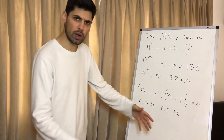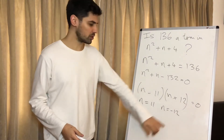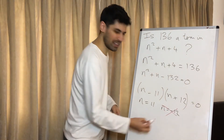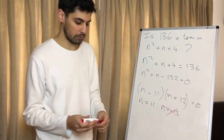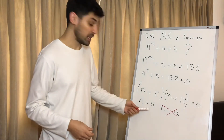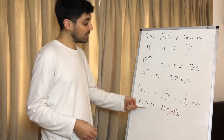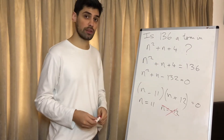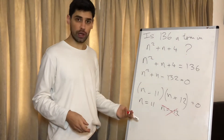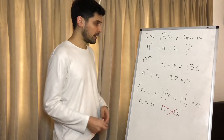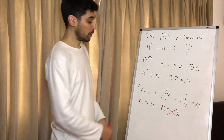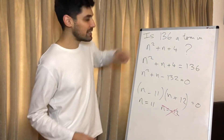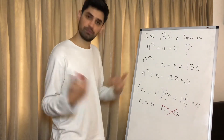For this bracket times this bracket to equal 0, one of the brackets must equal 0, because anything times 0 equals 0. So if the first bracket equals 0, n must equal 11. Or if the second bracket equals 0, n equals minus 12. We've got two values: n is 11 and n is minus 12. We can't have the minus 12th term in a sequence, but n equals 11 does make sense — so 136 is the 11th term. Because we have an integer, this is confirmed as a term in the sequence.